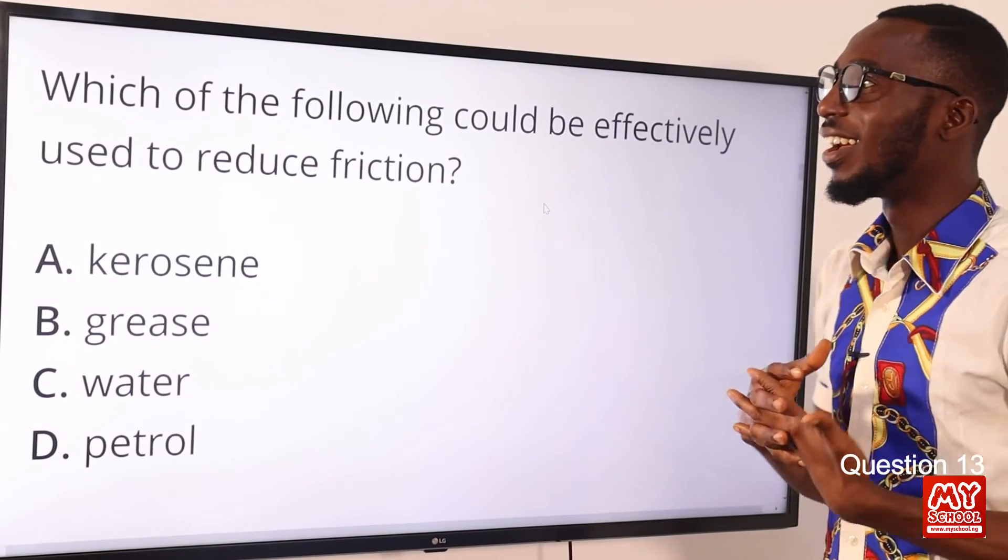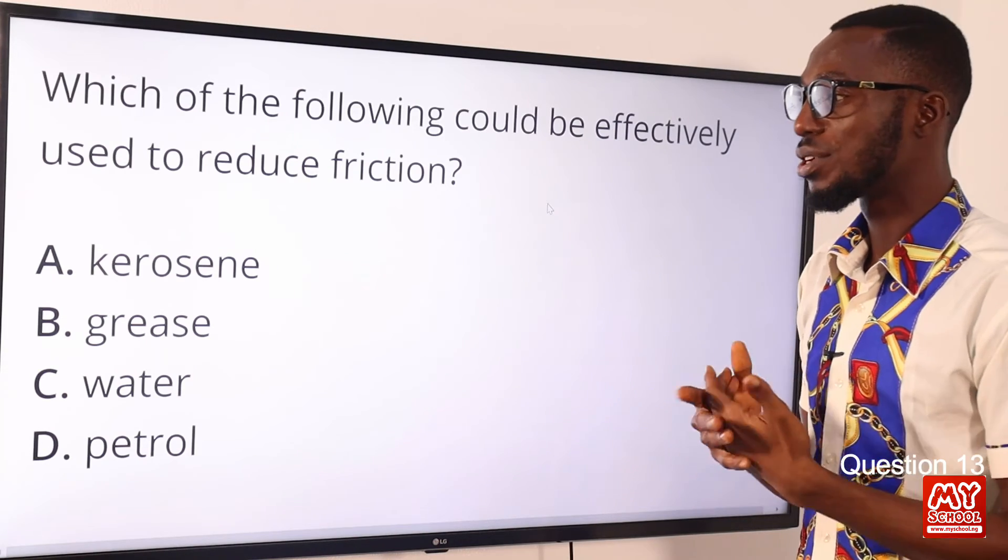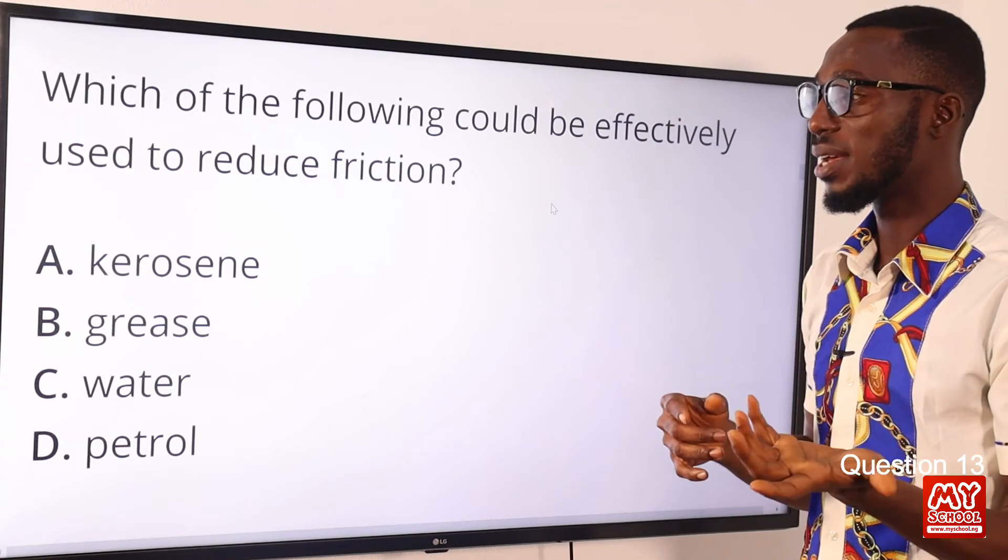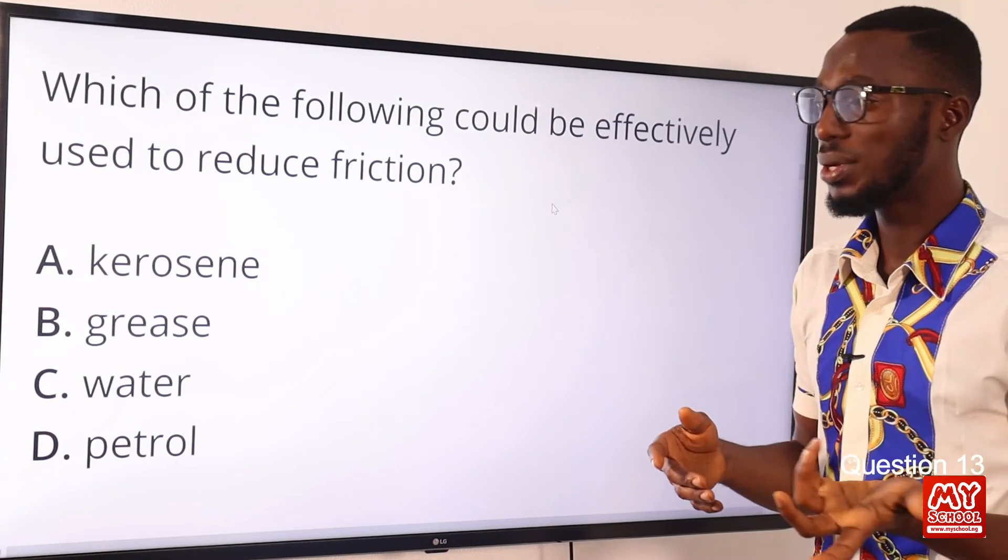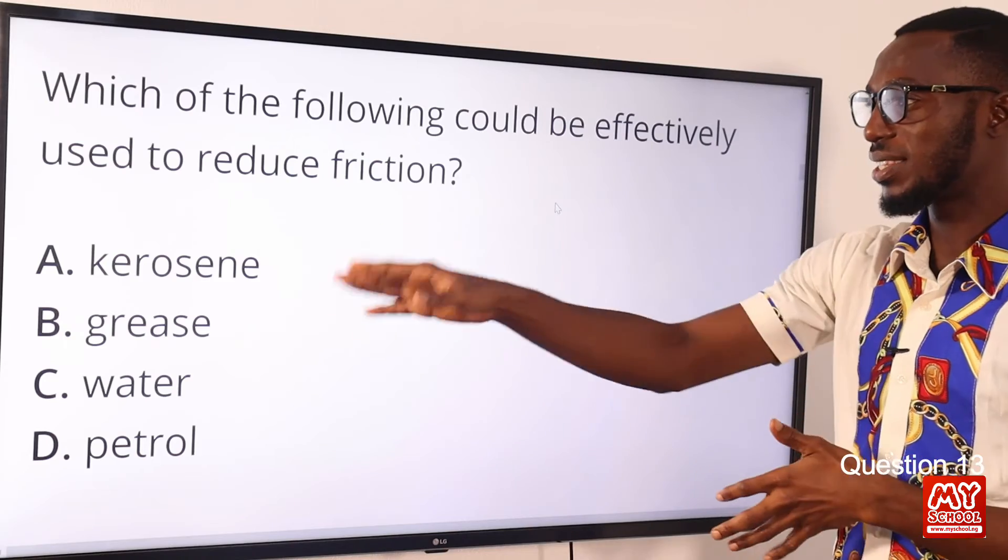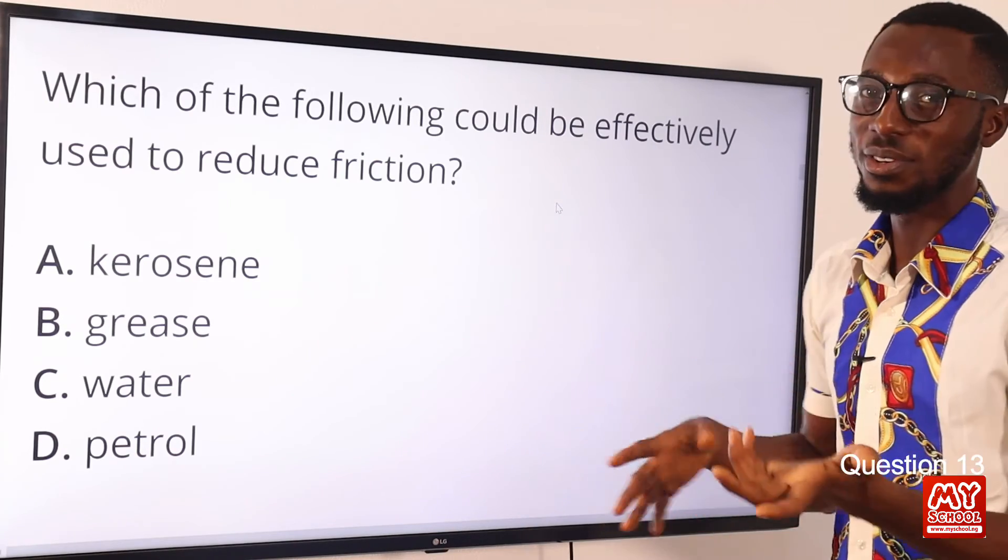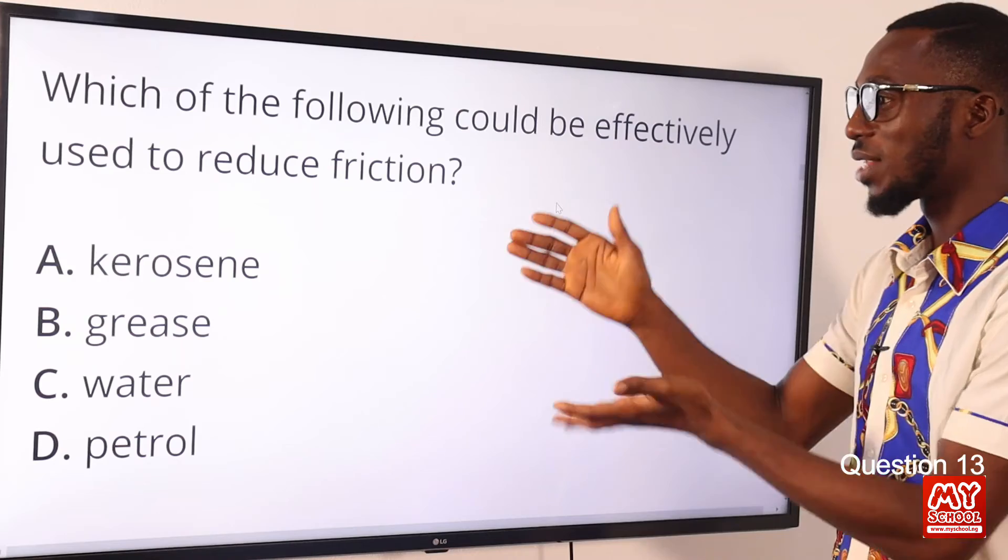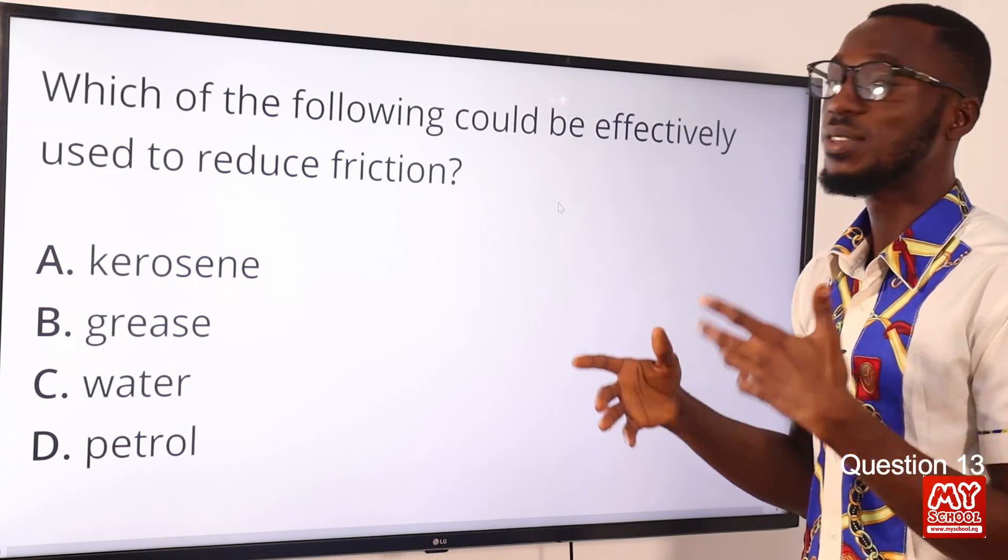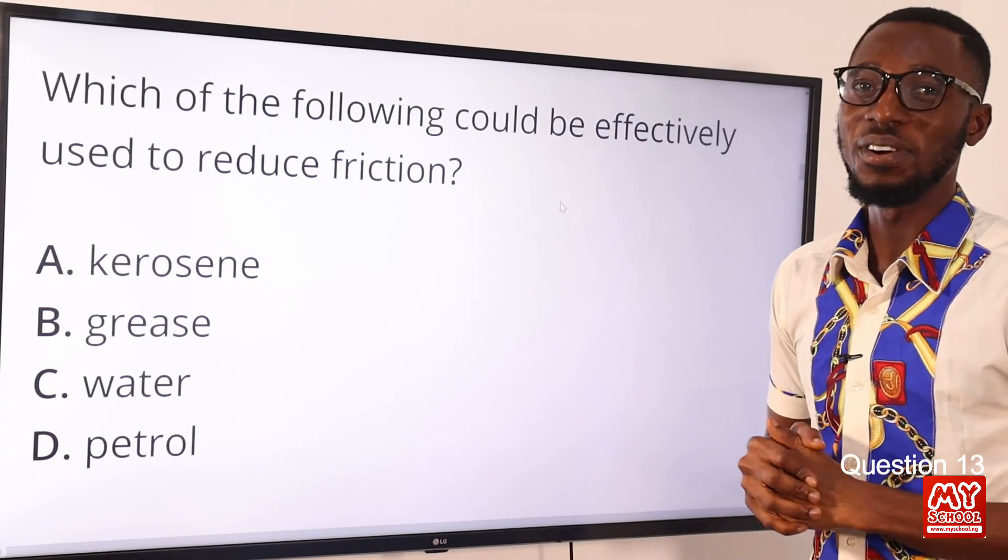Question 13. Which of the following could be effectively used to reduce friction? There are ways to reduce friction. You can streamline the moving body parts, you can use grease, you can use oil, you can use different materials. But not any of this aside from grease. So what we can use, we can use grease, oil, and what have you. So the correct option here is option B. We can use grease to reduce friction. Remember, friction causes wear and tear. So correct option is option B for grease.